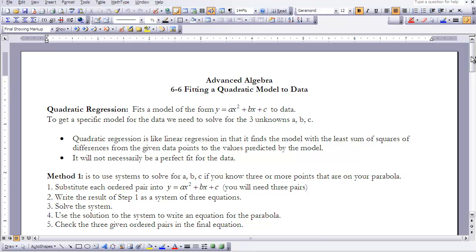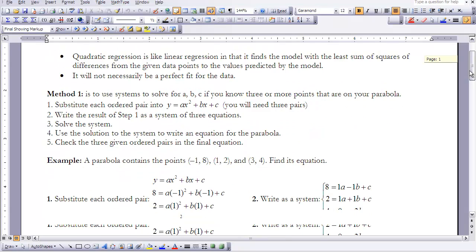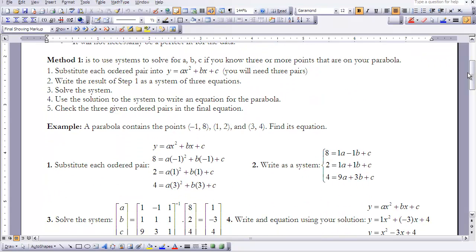The first method we're going to use is doing it by hand. As stated above, we need to solve for a, b, and c. If we know three or more points that are on our parabola, we can do this. We're going to basically create a system. And if we have three variables that we need to solve for, that means we're going to need three equations in our system. So we need to have at least three points on our parabola in order to find a model for this parabola.